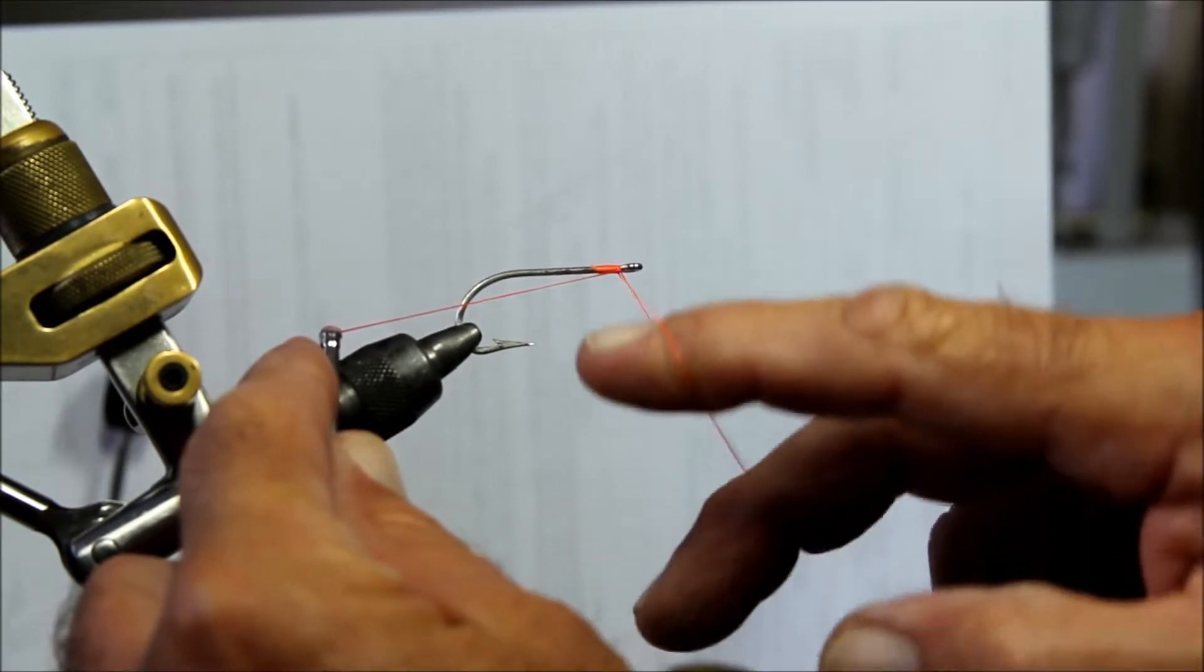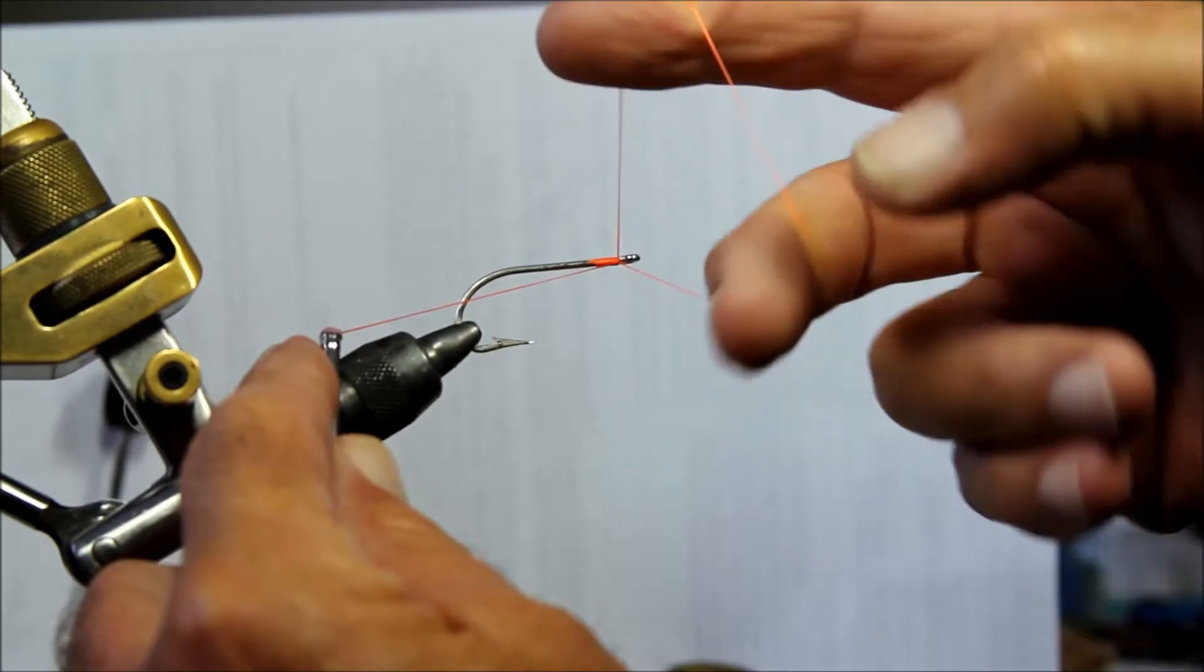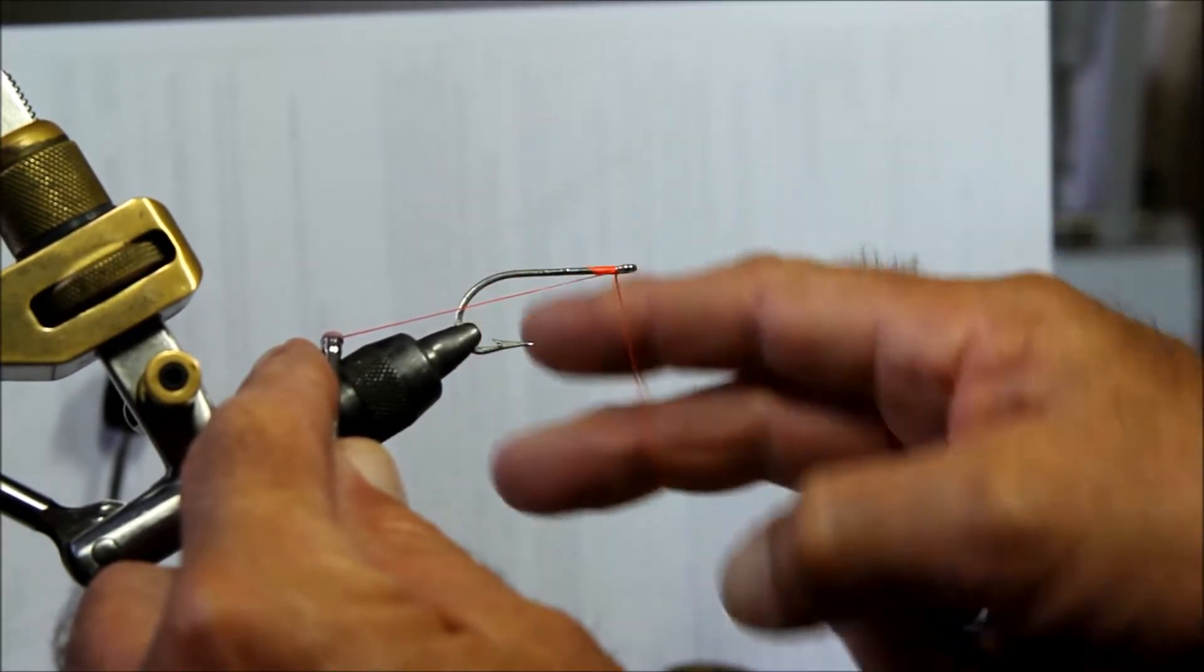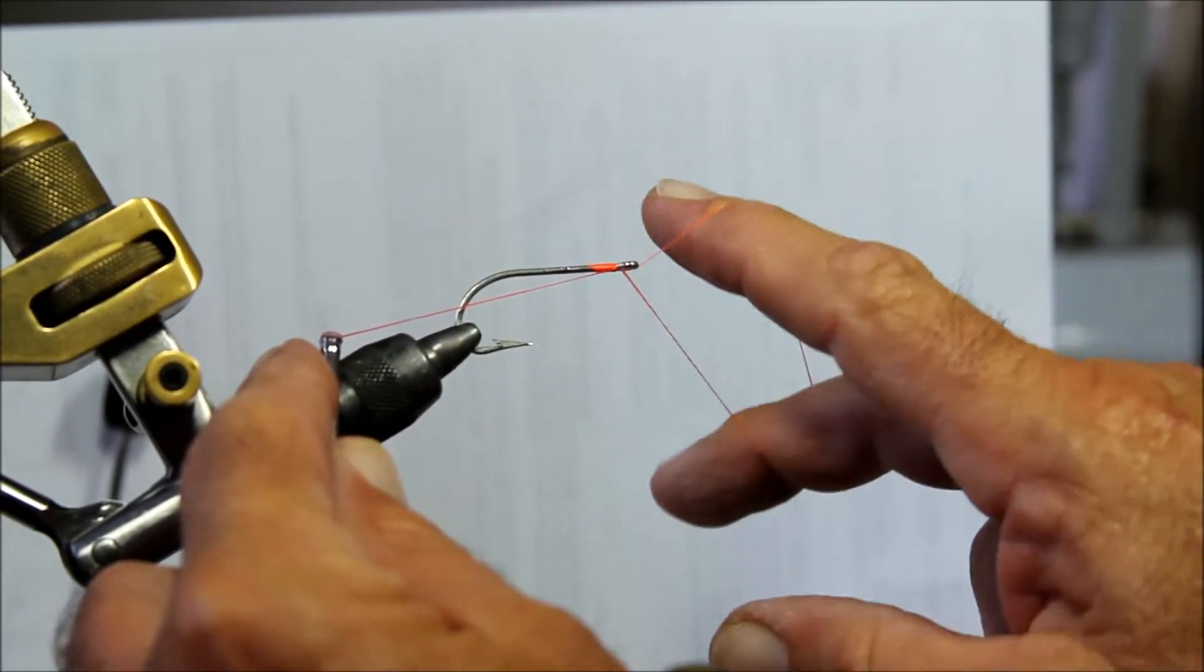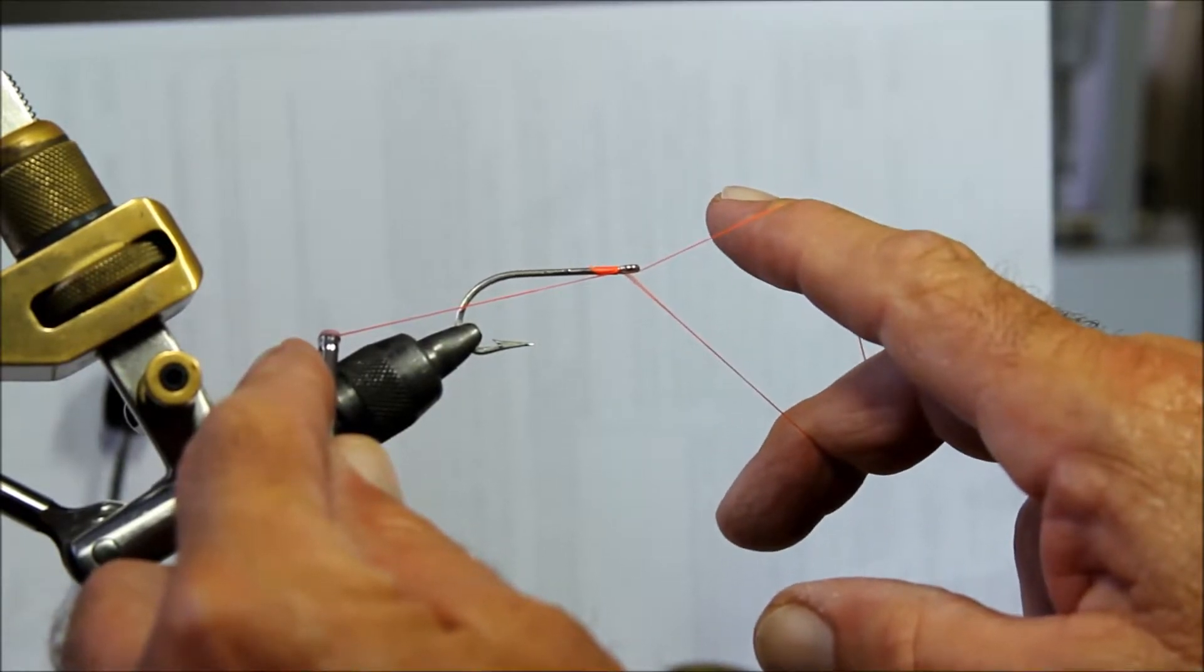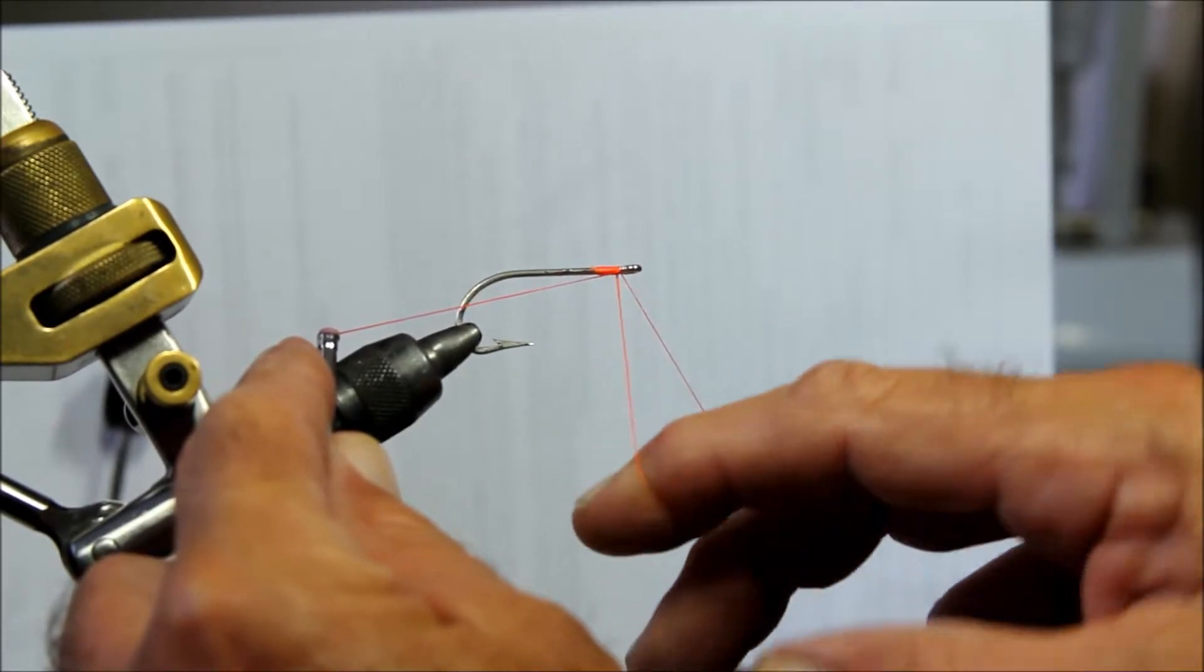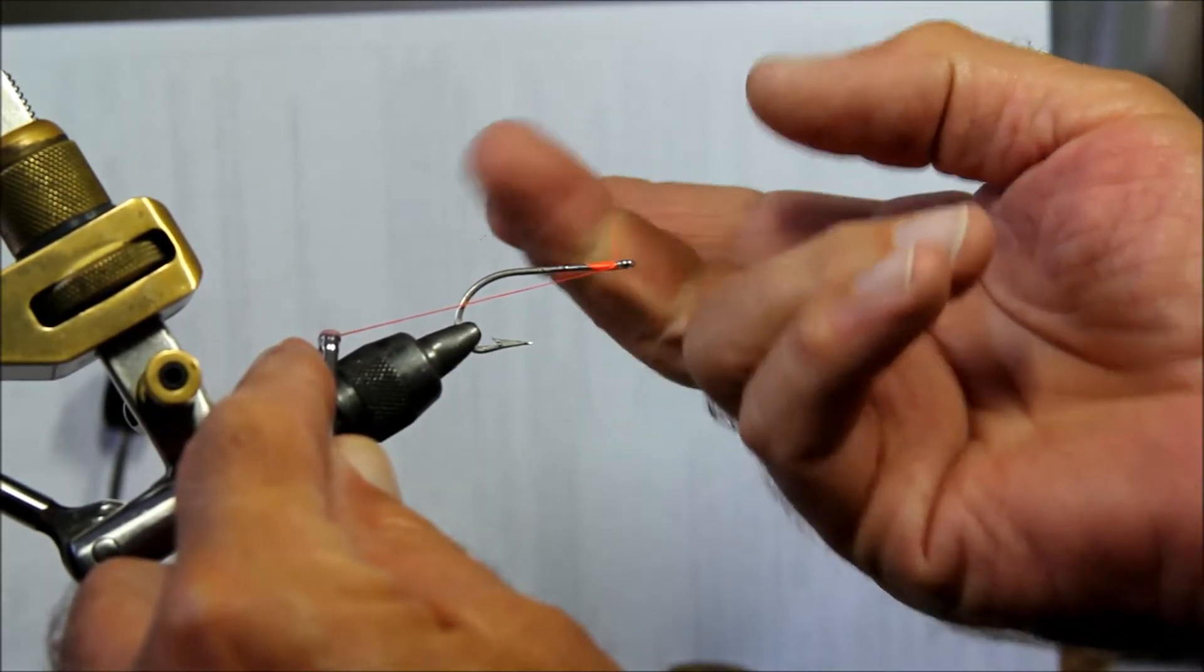Index finger comes back over, index finger over, and what happens is that the thread that's coming over my index finger now lays along the shank of the hook, and this thread is the one that whips it in place.